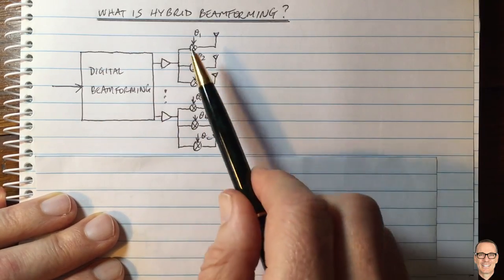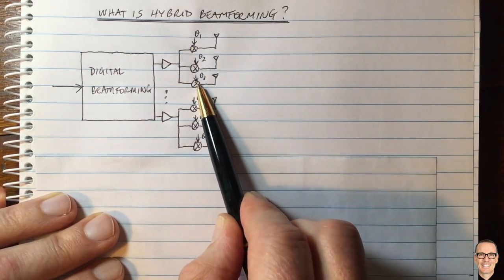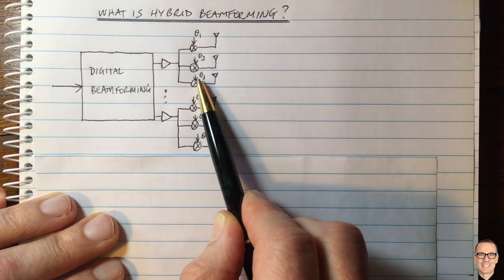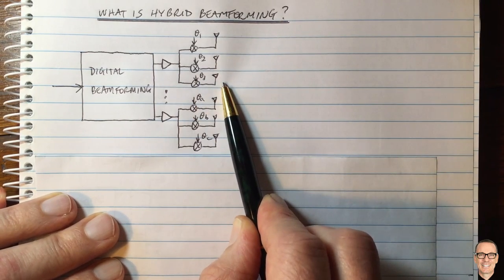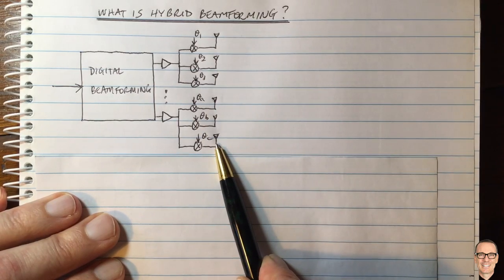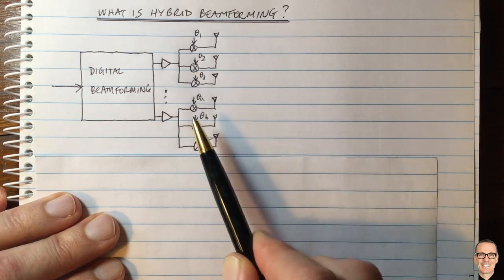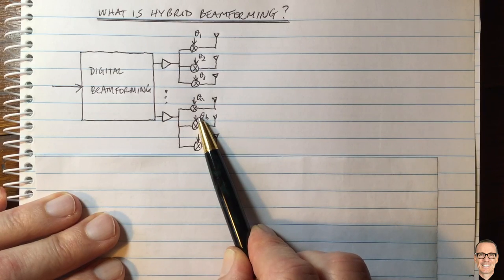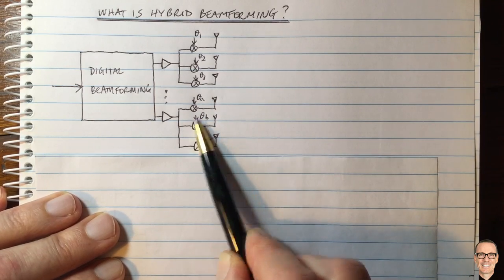In this structure here we've got these three antennas being analog beamforming together, and these antennas might even be machined out of the same piece of metal for example, and these ones might be machined out of another piece of metal, and then they're located next to each other in the transmitting device.